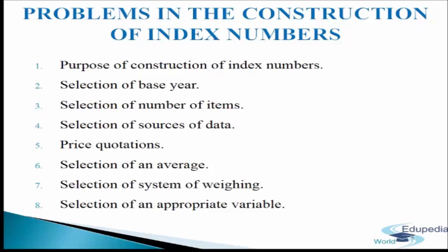Problem 6: Selection of an average. We need to decide on the average to be used because index numbers are specialized averages. We need to select from various averages such as arithmetic mean, geometric mean, mode, median, etc. Median and mode are not used because of their limitations. Out of arithmetic mean and geometric mean, geometric mean is considered the best average because it gives equal weightage to equal ratios of change. Though arithmetic mean is simpler to calculate, geometric mean is gaining popularity due to the use of electronic computers.